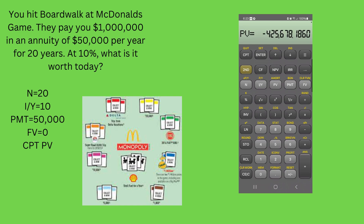The answer is $425,678. This means you would be indifferent between taking $425,678 today or taking the $50,000 a year for the next 20 years.